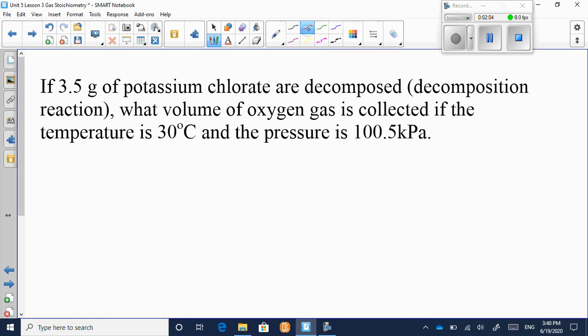Step number one of stoichiometry says you write a balanced equation. So potassium chlorate, KClO3, it says it decomposes. And so we know one of the things produced is oxygen gas. The other thing must be potassium chloride.